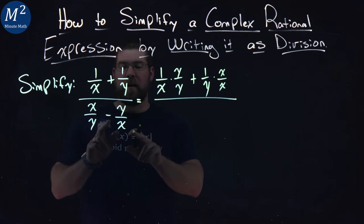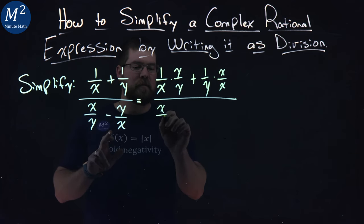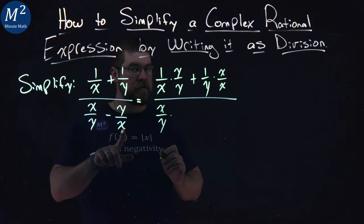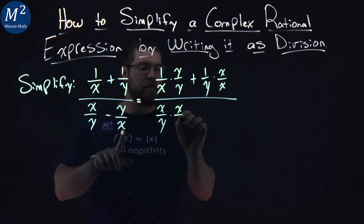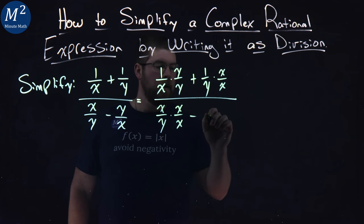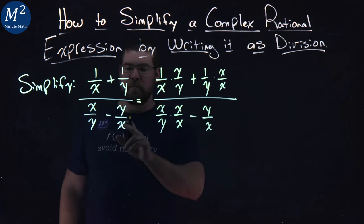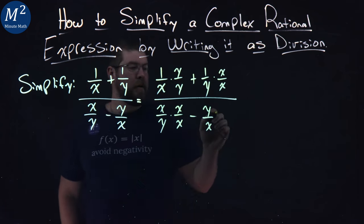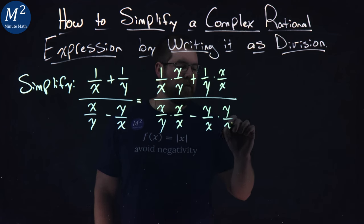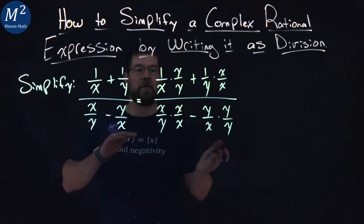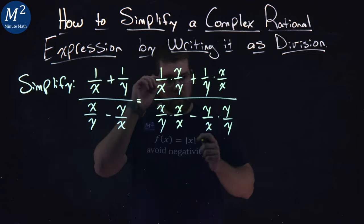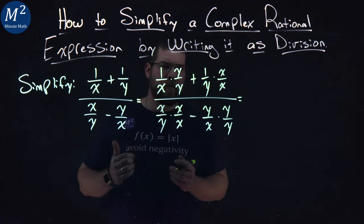We have x over y minus y over x. x over y, I'm going to multiply that by the other denominator so we can combine it, which is an x over an x. We have y over x here, the other denominator being a y. Multiply it by y over y. Now, take your time with this. It's very easy to get your x and y's confused.